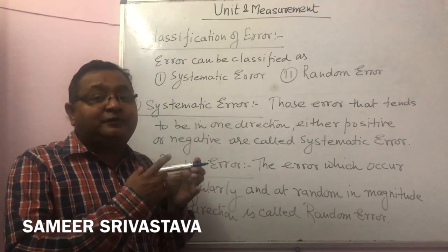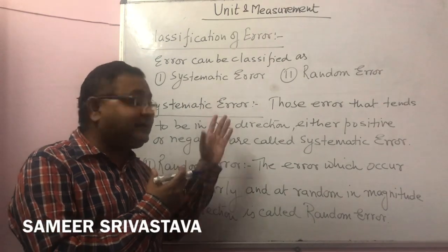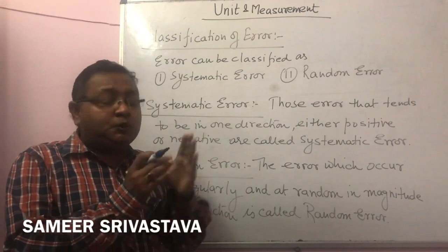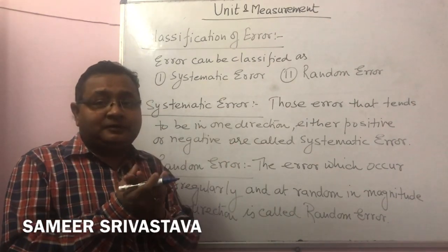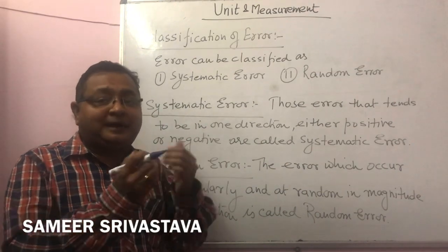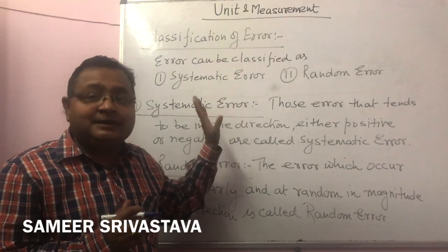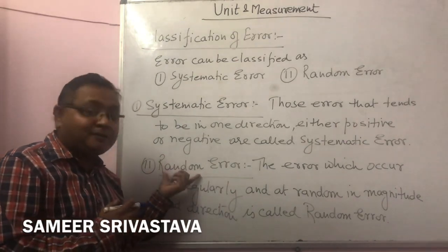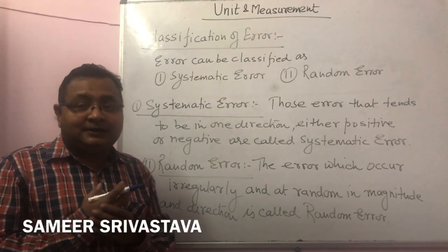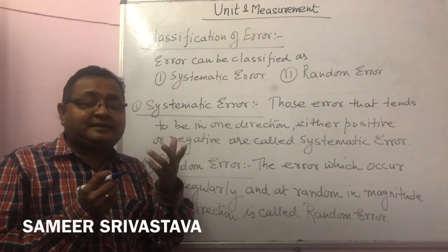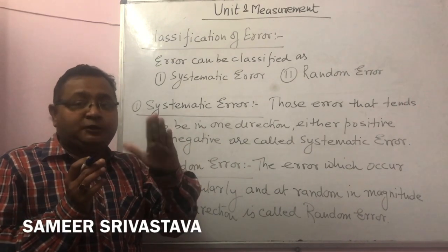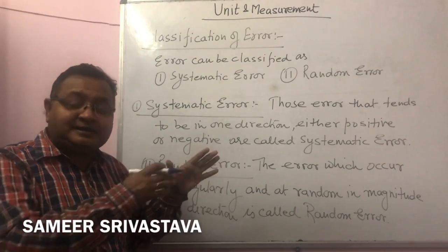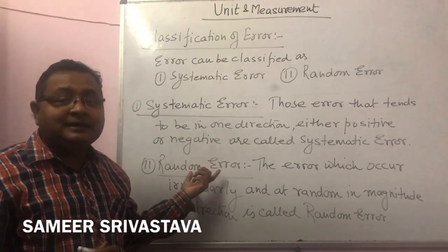Either the error value is positive or negative — that type of error is called a systematic error. For example, the error present in a Vernier caliper instrument is systematic error. Error may be positive, zero, or negative. When error comes as plus 0.05 or minus 0.05, that is called a systematic error.